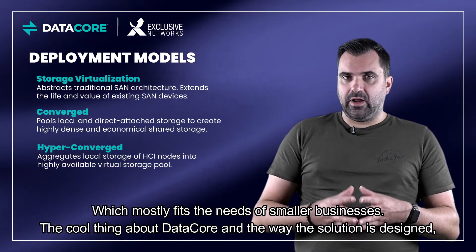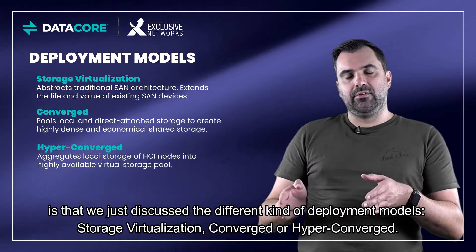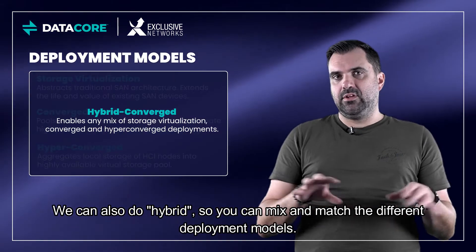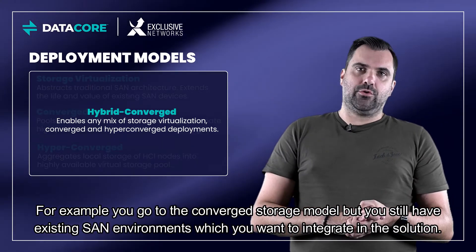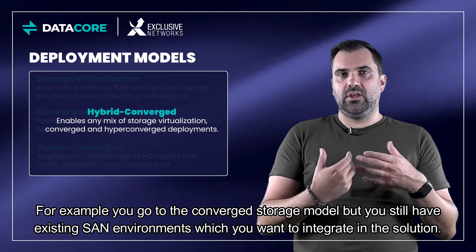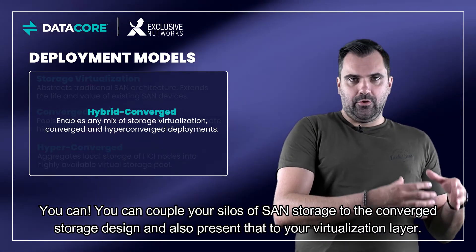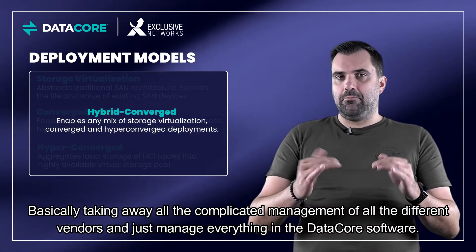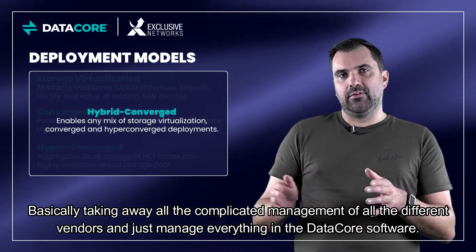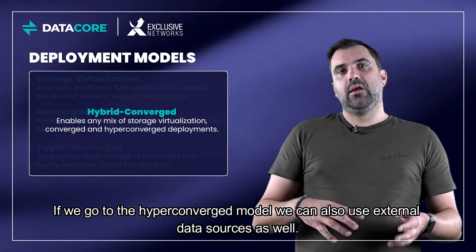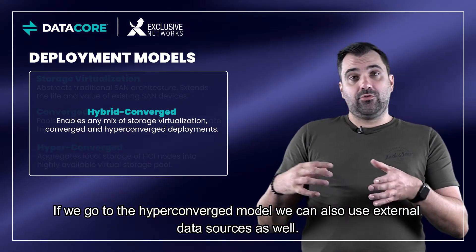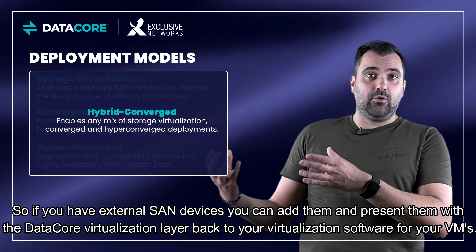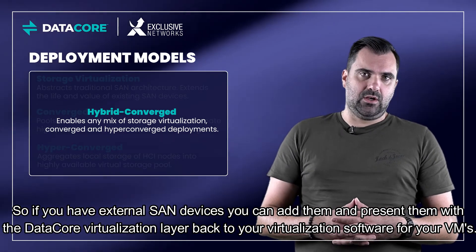The great thing about DataCore is that we can also do hybrid — you can mix and match different deployment models. For example, you go to the converged storage model but still have existing SAN environments you want to integrate. You can couple your silos of storage to the converged storage design and present that to your virtualization layer, taking away all the complicated management of different vendors and managing everything in the DataCore software. In the hyperconverged model, you can also use external SAN devices and present them through the DataCore virtualization layer to your virtualization software for your VMs.